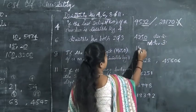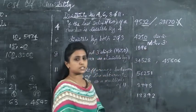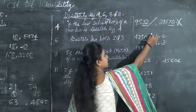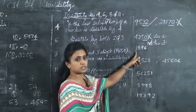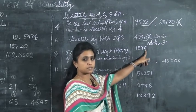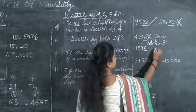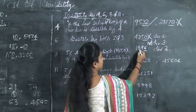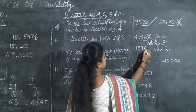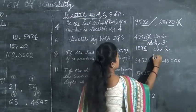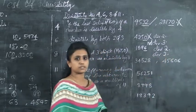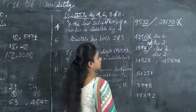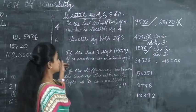Let us take one more number: 1896. Is this number divisible by 6? Check divisibility by 2: the last digit is 6, so it is divisible by 2. Now check divisibility by 3: the sum of digits is 1 plus 8 plus 9 plus 6 — that is 1 plus 8 is 9, plus 9 is 18, plus 6 is 24. Since 24 is divisible by 3, this number is divisible by both 2 and 3, which means 1896 is divisible by 6.